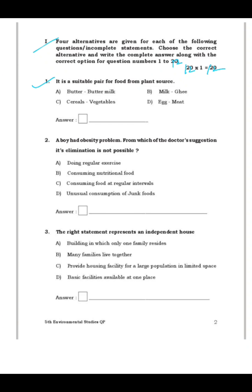Question 1: Find the suitable pair for food from a plant source. We get food from two sources — plant source and animal source. Butter and buttermilk are from the animal source. Milk and ghee are animal source. Egg and meat are animal source. Cereals and vegetables — yes, those are plant source. So C is the right answer.